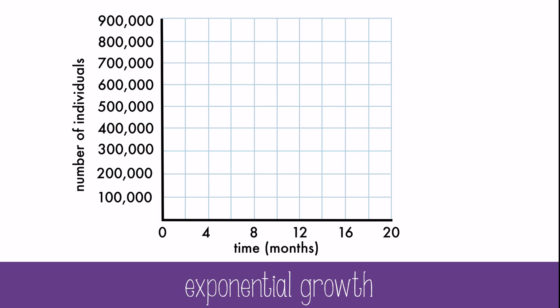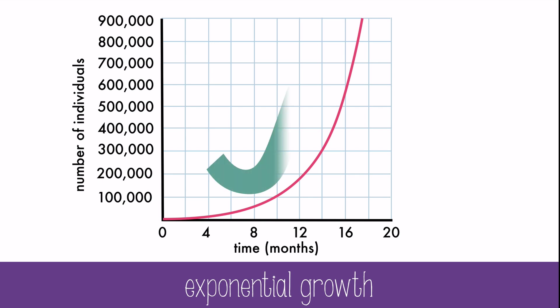If you watch a population begin to grow over time, you'll find that the population size expands by ever-increasing increments during successive intervals. The larger the population gets, the more individuals there are to reproduce, which leads to exponential growth. This graph is sometimes called a J-curve because of the shape of a J that it makes.